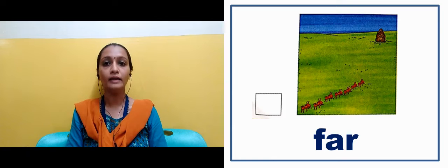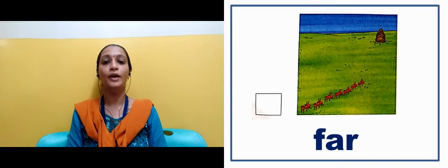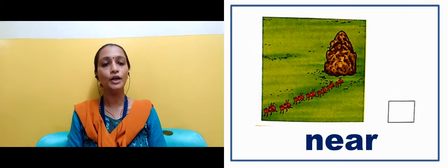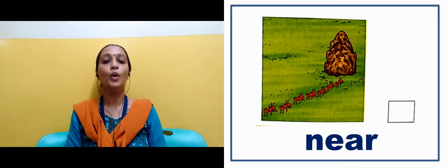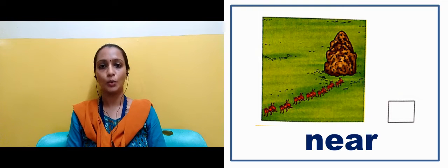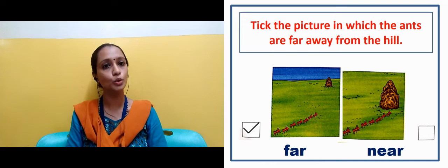Now in the next slide you can see that the ants are far from the ant hill. Jho ant hai woh ant hill ke nasdeek hai. Now in the next slide there is a question with two images: kaansi image mein jo ant hai woh ant hill se door hai.